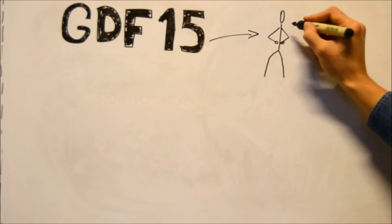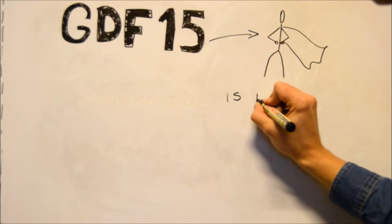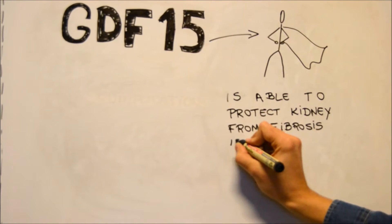Recently, several studies have demonstrated that in type 2 diabetes models, GDF-15 is able to attenuate the development of renal fibrosis, reducing diabetic nephropathy.